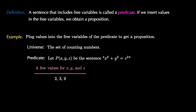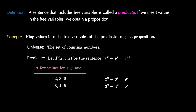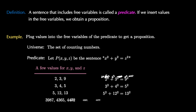When x, y, and z are 2, 3, and 9, we get '2 squared plus 3 squared equals 9 squared,' which is a false proposition. When x, y, and z are 3, 4, 5, we get the classic Pythagorean triple: 3 squared plus 4 squared equals 5 squared. We can also get 5 squared plus 12 squared equals 13 squared, which is also true. And we can get another proposition that we have to check to see if it's true or false.